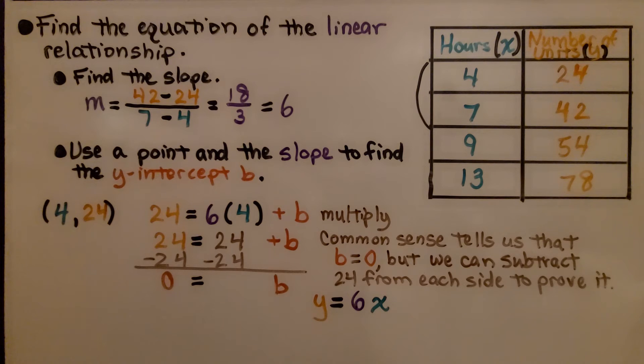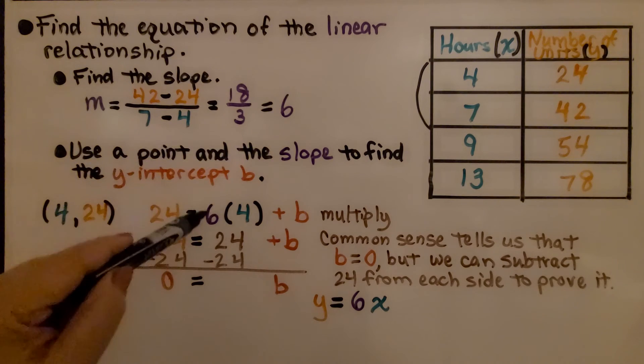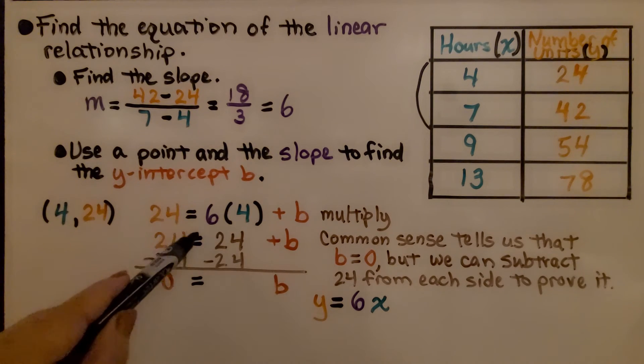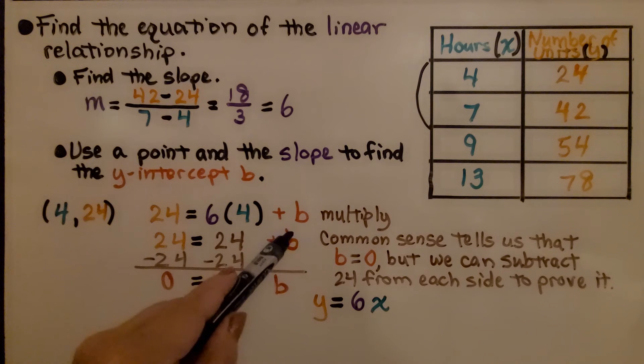Now we use a point and the slope to find the y-intercept b. We substitute 24 for y and 4 for x. We have our slope 6. We multiply and get 24 equals 24 plus b.